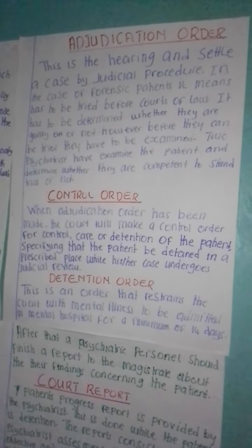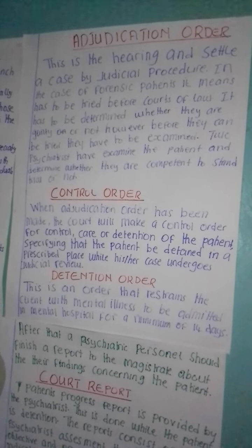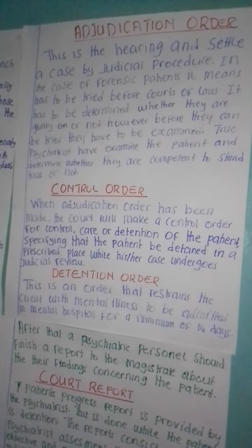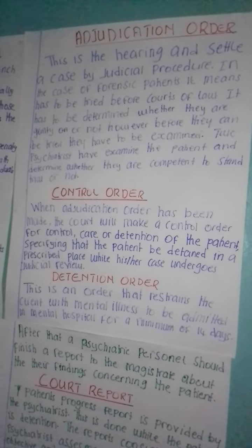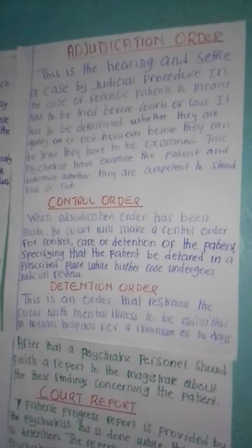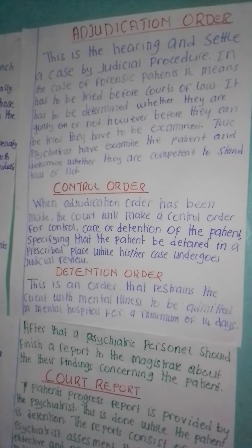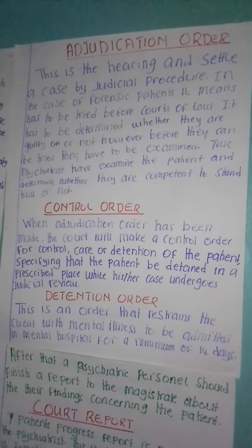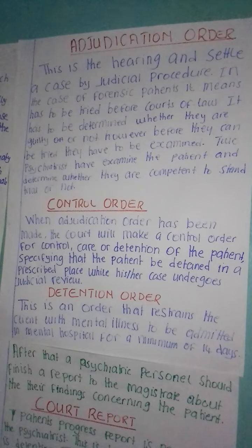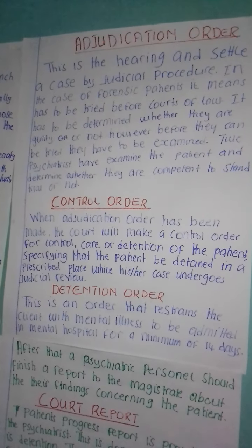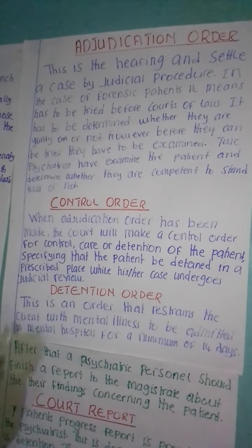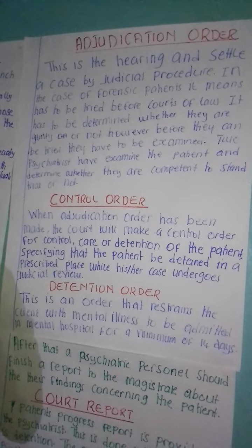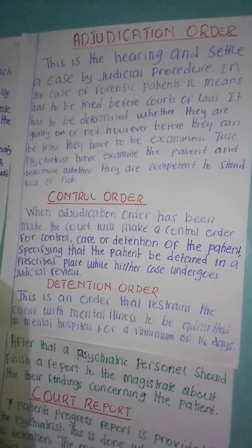The adjudication order is the hearing and settling of a case by judicial procedure. In the case of a forensic patient, it means the patient has to be tried before a court of law, and it has to be determined whether they are guilty or not. However, before they can be tried, they have to be examined. Two psychiatrists, after examining the patient, determine whether they are fit to stand trial or not.